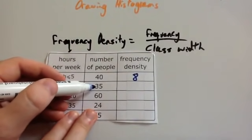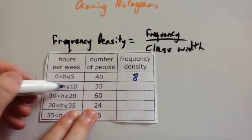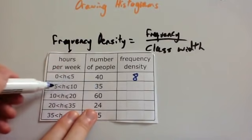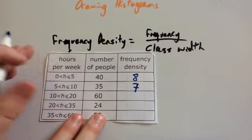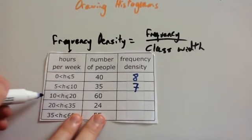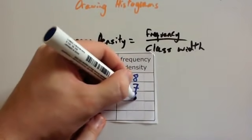Next one. The frequency is 35. The class width is 5. 35 divided by 5 is 7. The next one. 60 is the frequency. The class width is 10. 60 divided by 10 is 6.